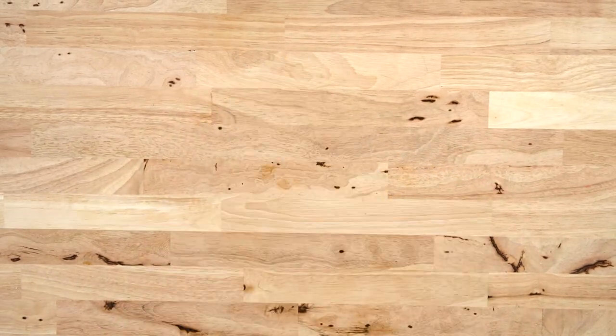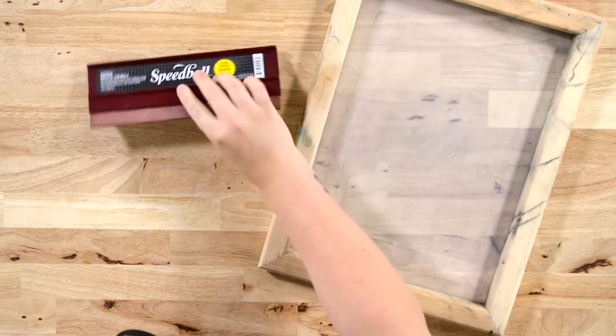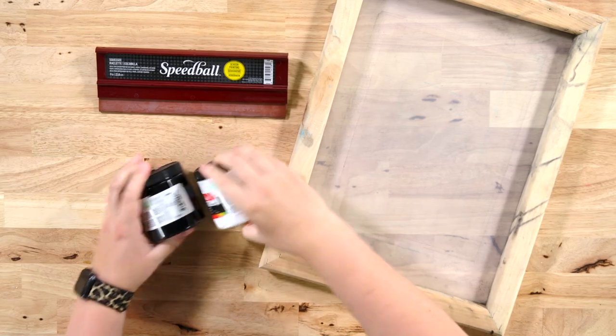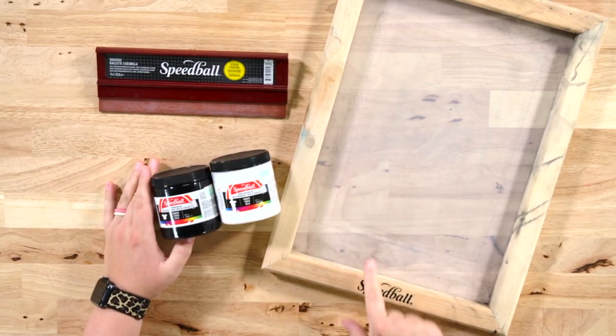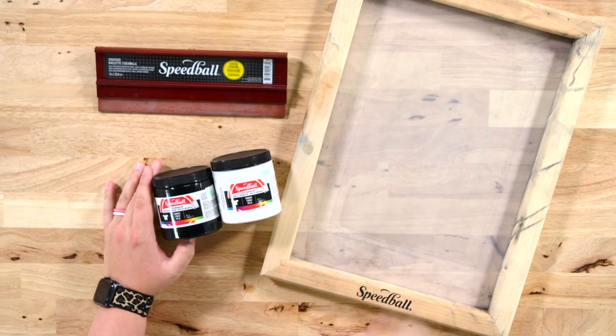Now we have dabbled in screen printing here at Oak and Lamb. And there are only three basic things that you need. Screen printing ink, a frame, and a squeegee, a little scraper. This is all you need.